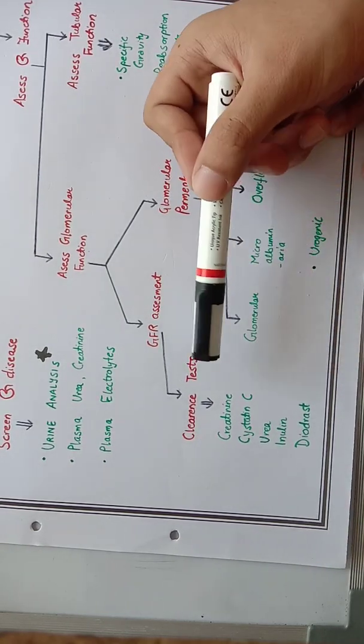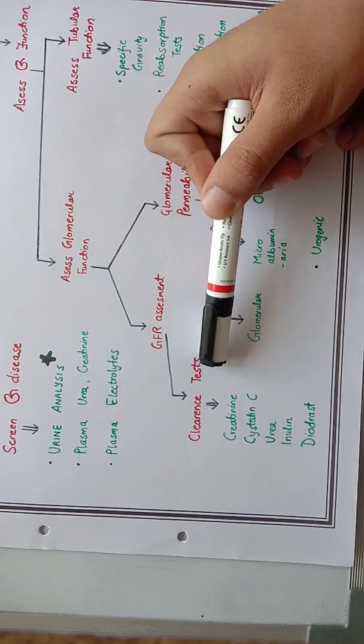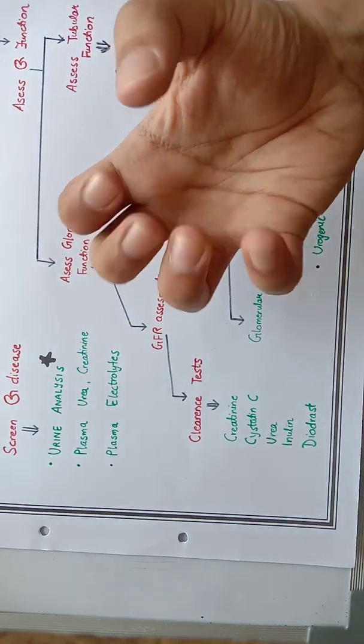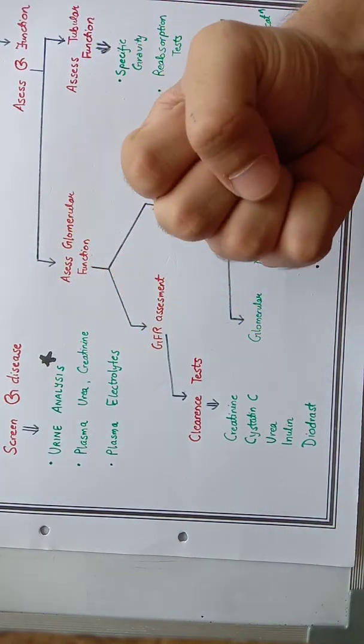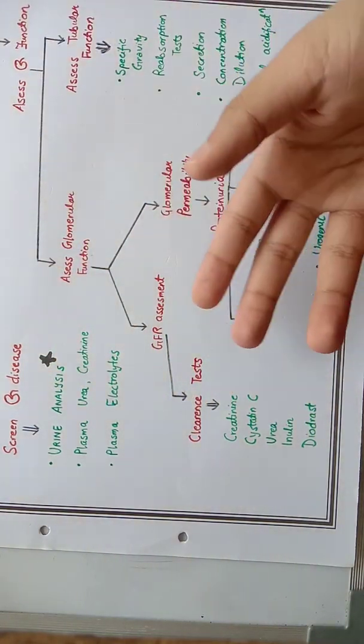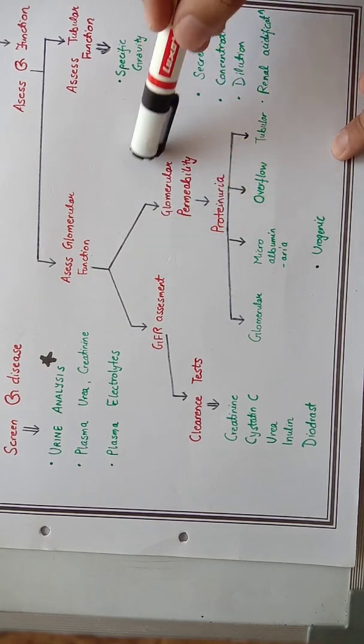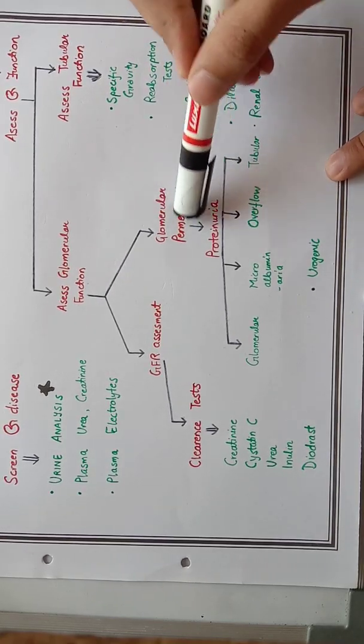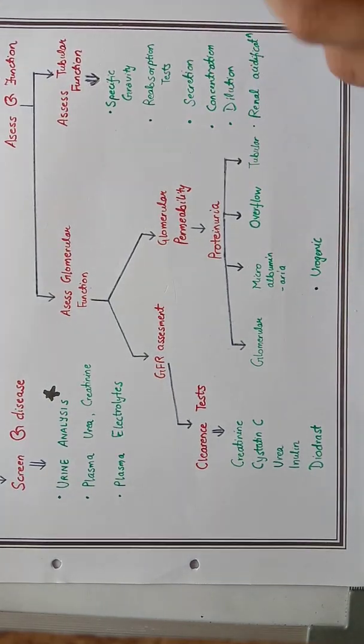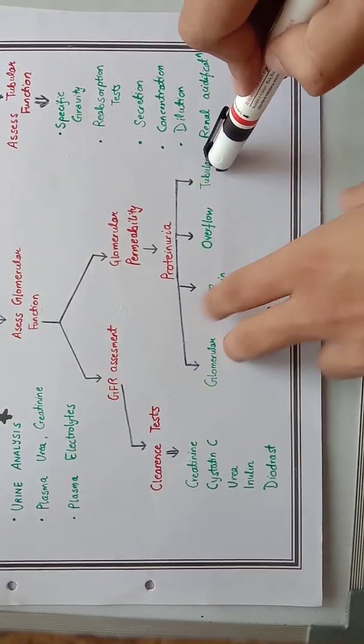You give a substance to the body and see how clearance happens, so GFR will be more or less. Clearance test uses these substance markers: creatinine, urea, inulin, and diodrast. This is your proteinuria. So this is how you assess glomerular and tubular function: microalbuminuria, proteinuria, overflow proteinuria, and urogenic proteinuria.